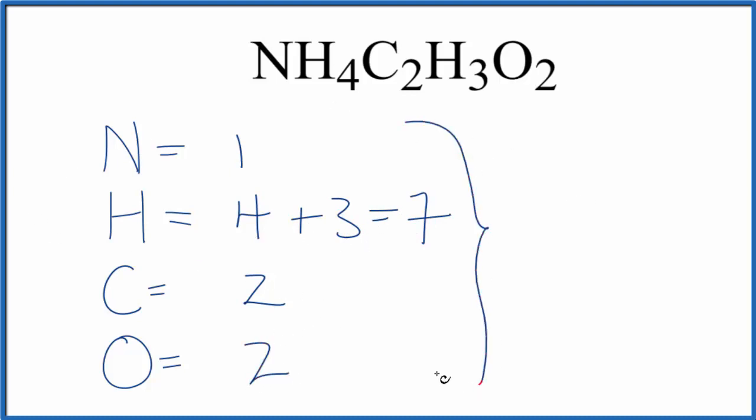If we add all of these numbers up, we get 8, 10, 12 total atoms for ammonium acetate NH4C2H3O2.